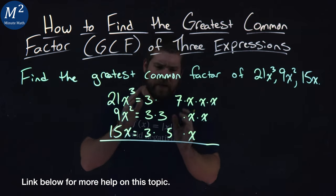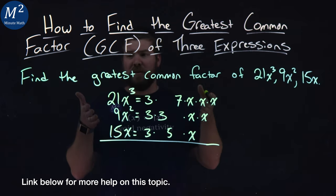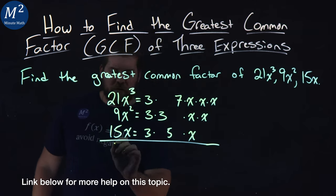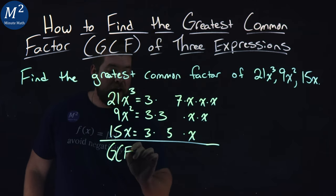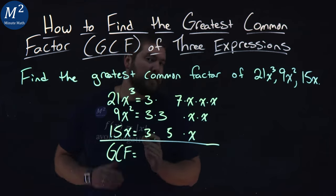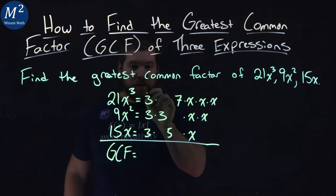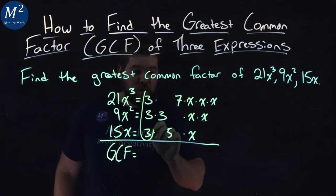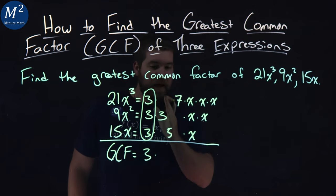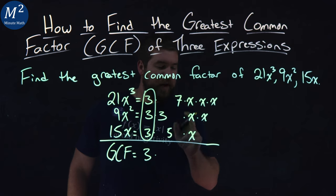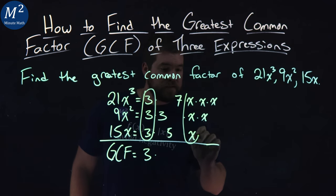So how does this help us? Well, this helps us visualize our greatest common factor. We want to find the GCF here. What is most common in each one of these expressions? We see each one has one 3 in it, right there. And each one also has an x in it, 1x.